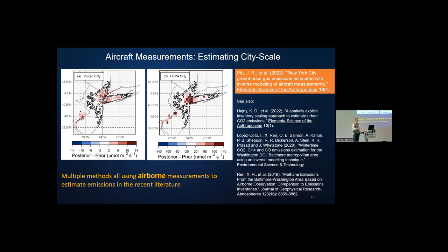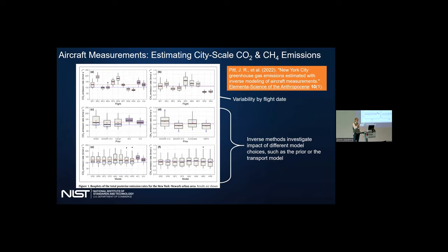Here are some of his results. The top panel shows the variability of his emissions per flight date. CO2 is on the left and methane on the right. He used his inversion methods to investigate the impact of different model choices, such as the prior and the transport model, on the variability. For methane in particular, his estimate in the red square was significantly higher than what the gridded EPA reports, shown in the blue square.